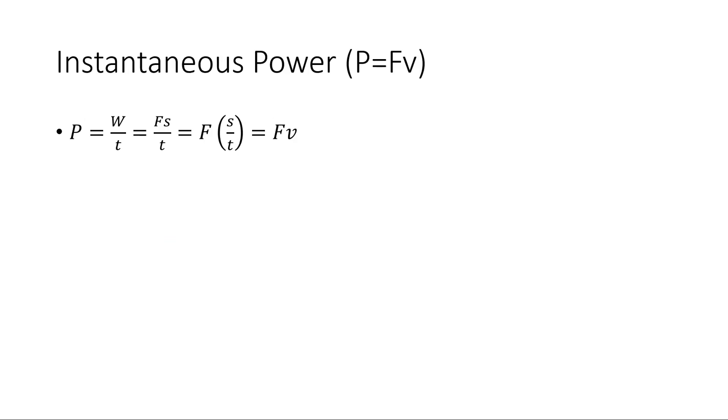We can also think about power from a particular force. We can simplify this equation. If power is work over time, and work is force times displacement, then power is force times displacement over time. Displacement over time is just velocity. So power ends up being just force times velocity, force times speed. This will tell us the power from a particular force that's moving an object.